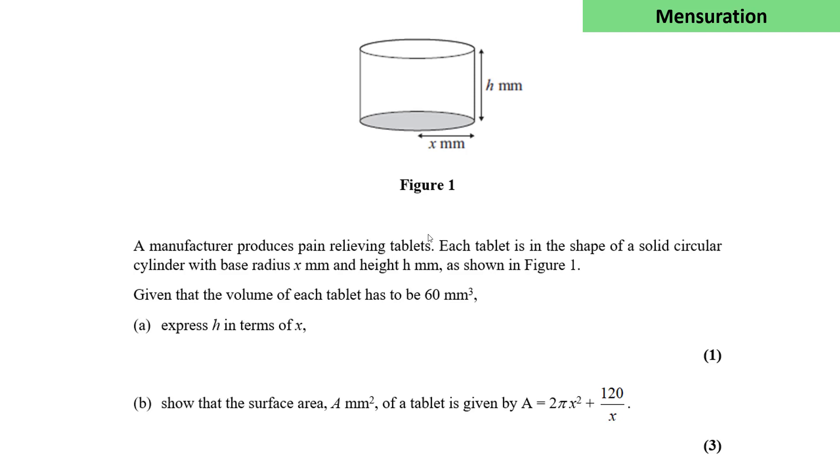Typically, the mensuration formulas are used in calculus questions. We're told tablets have a cylindrical shape. The volume of the tablet is 60 mm³, so πx²h = 60. We rearrange to get h = 60/πx².